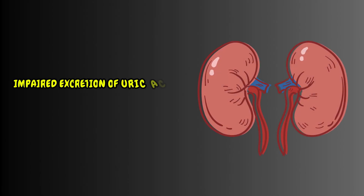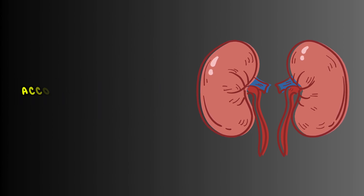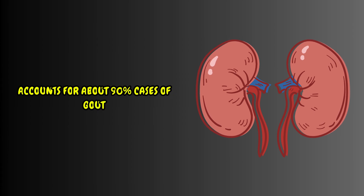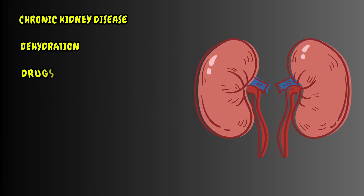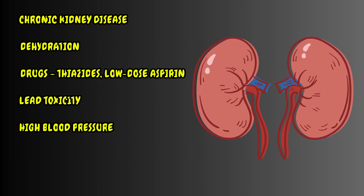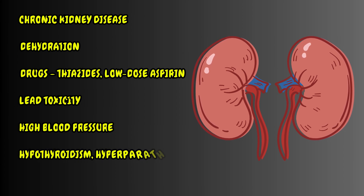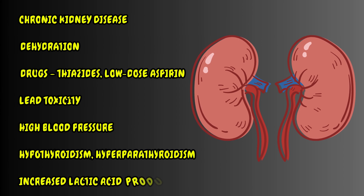Impaired excretion of uric acid is the major cause for high uric acid levels and accounts for about 90% of gout cases. It can be due to chronic kidney disease, dehydration, drugs such as thiazides and low-dose aspirin, lead toxicity, high blood pressure, endocrine abnormalities like hypothyroidism and primary hyperparathyroidism, and increased lactic acid production due to starvation and exercise.